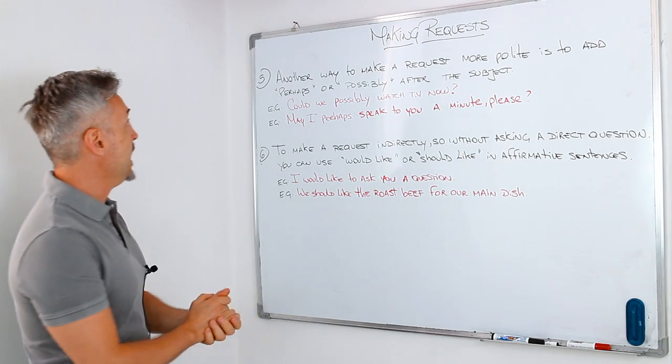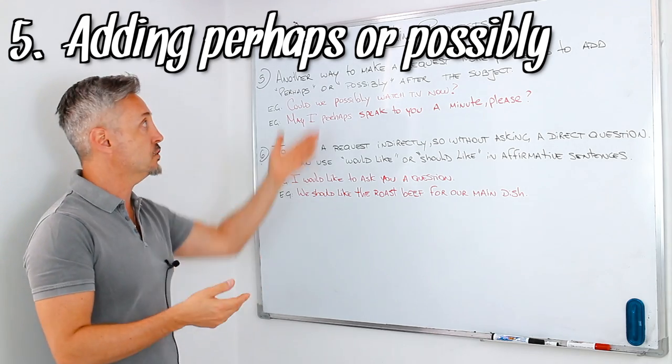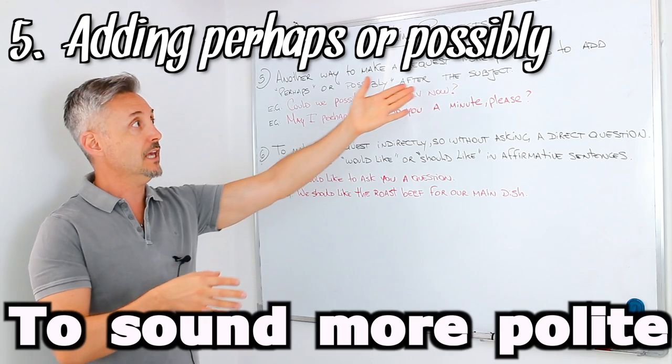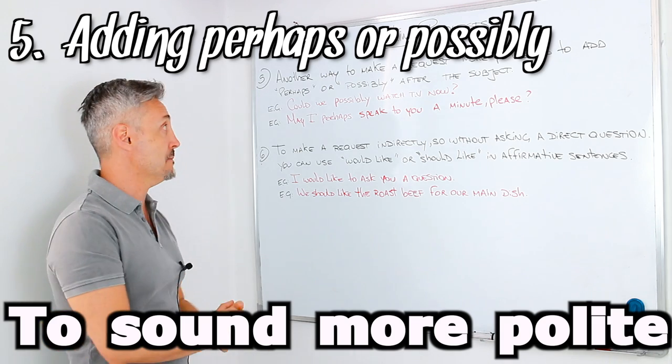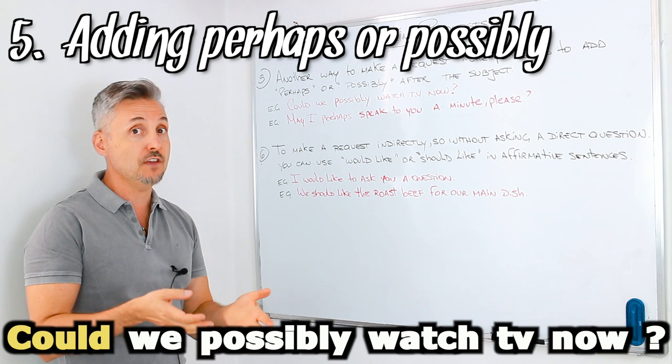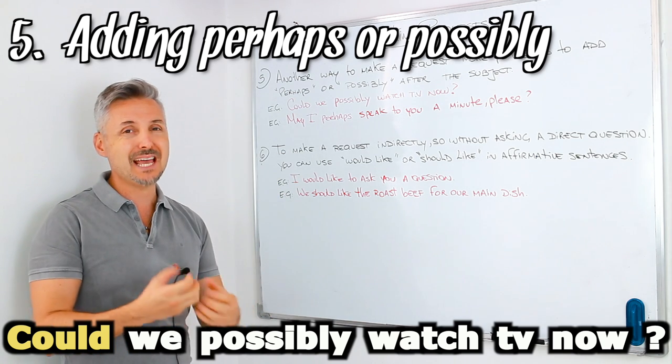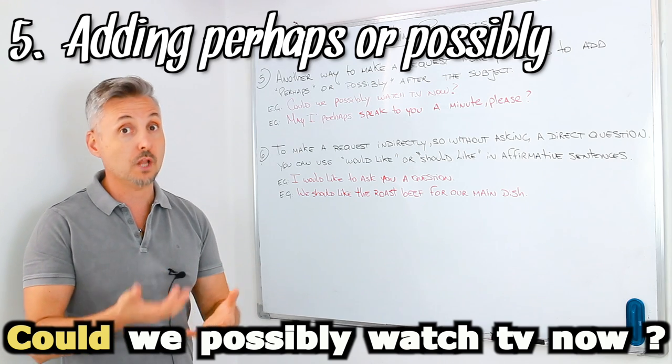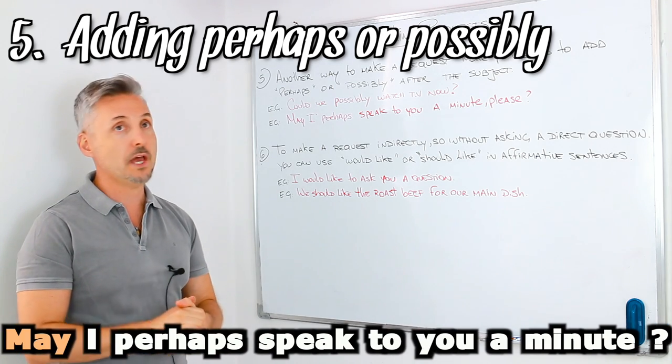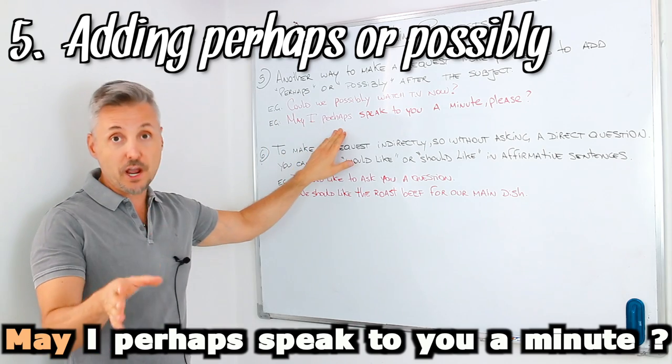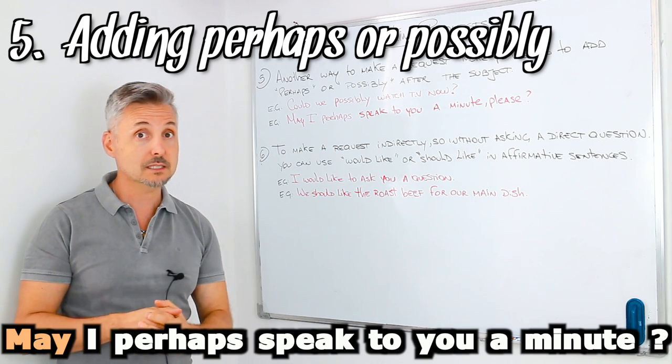Now, I'm going to erase this, and I'm going to look at two other points on making requests. Yes, we're back with the other two points, and the fifth point is that another way to make the request more polite is to add perhaps or possibly after the subject. Just like my examples. Could we possibly watch TV now? So possibly makes the question, or the request, more polite. The other example: May I, perhaps, speak to you in private, please? Here, perhaps makes the request more polite.